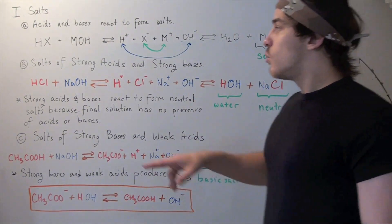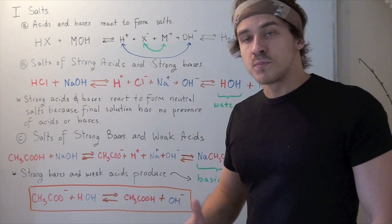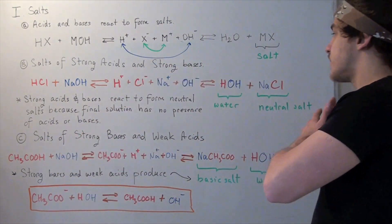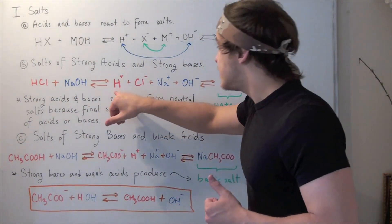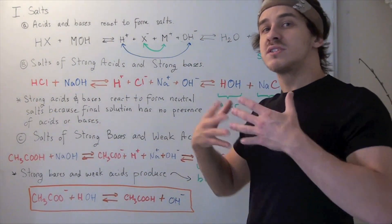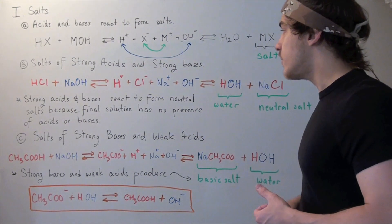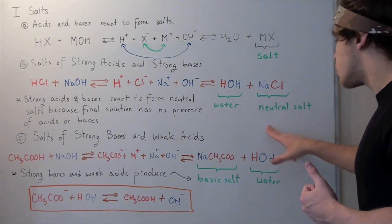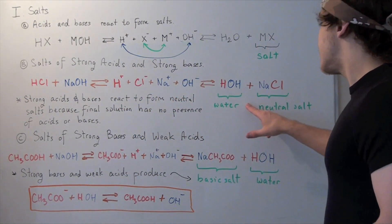Let's see why. HCl has a high Ka value because it's a strong acid, and NaOH has a high Kb value because it's a strong base. That means equilibrium lies all the way to the right, so at equilibrium we won't have any HCl or NaOH present. Auto-ionization of water will still occur, but the concentrations of H+ and OH− will be equal, making this a neutral salt.